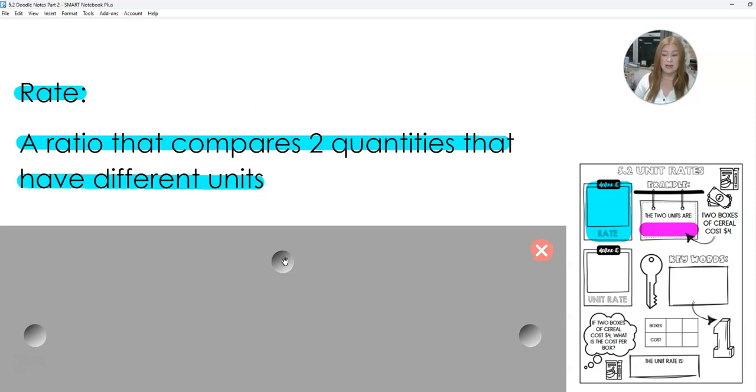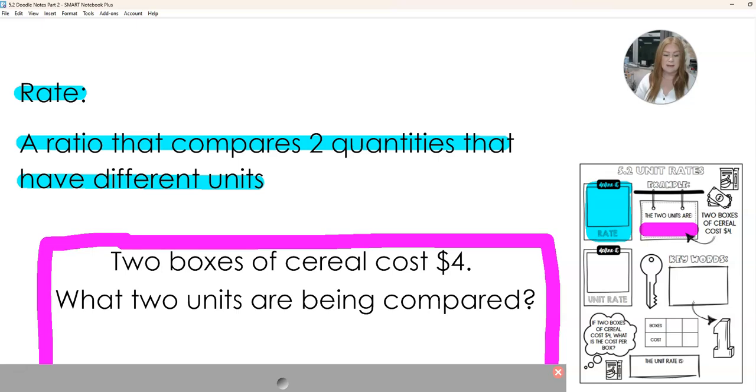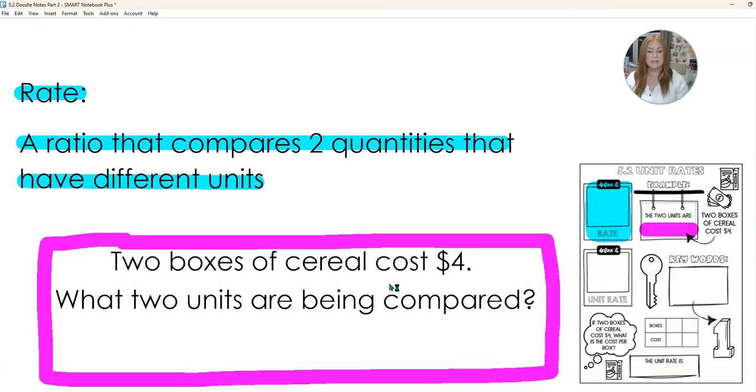Make sure you have your definition there. So in this example, we have two boxes of cereal cost $4. We're going to find the two units that are being compared.